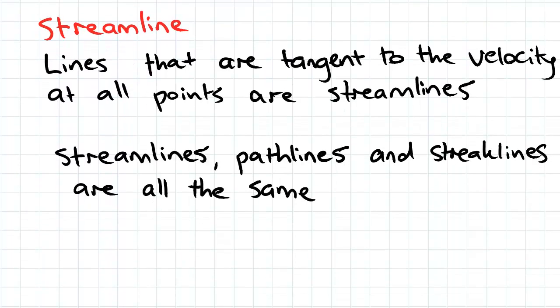And finally, streamlines — lines that are tangent to the velocity at all points. These are all the same, only for steady flows.